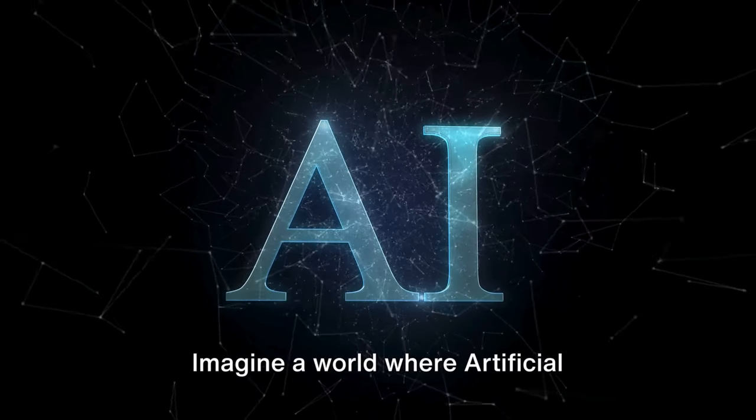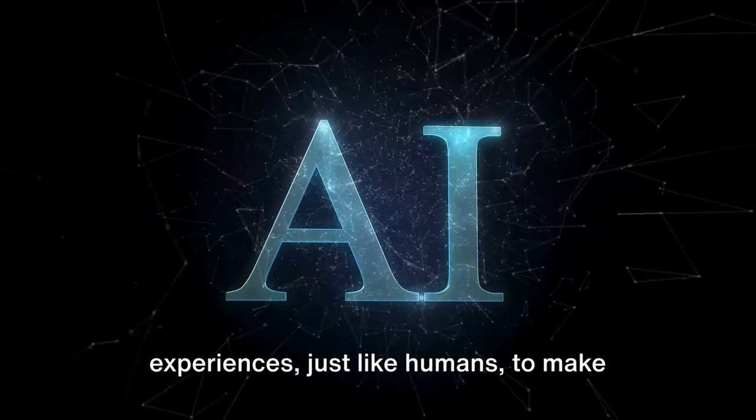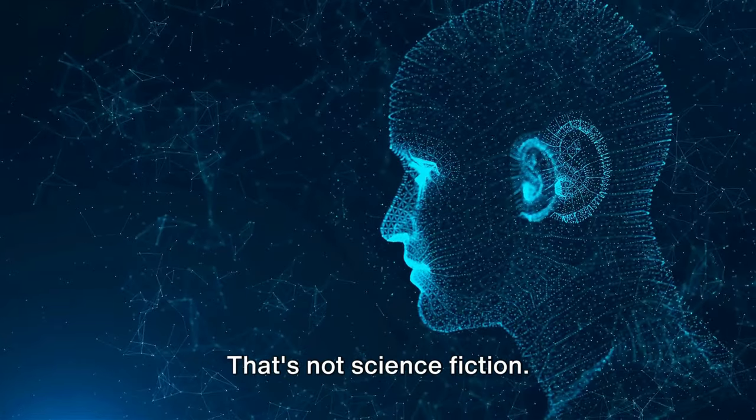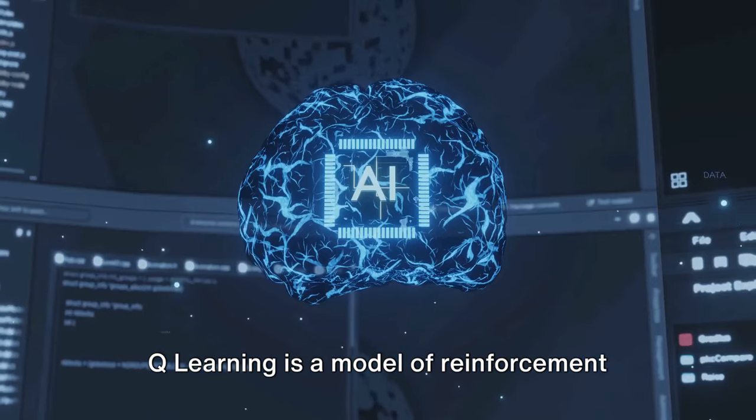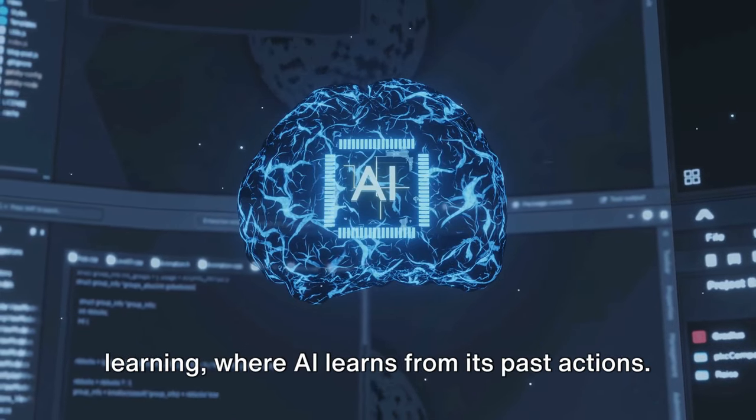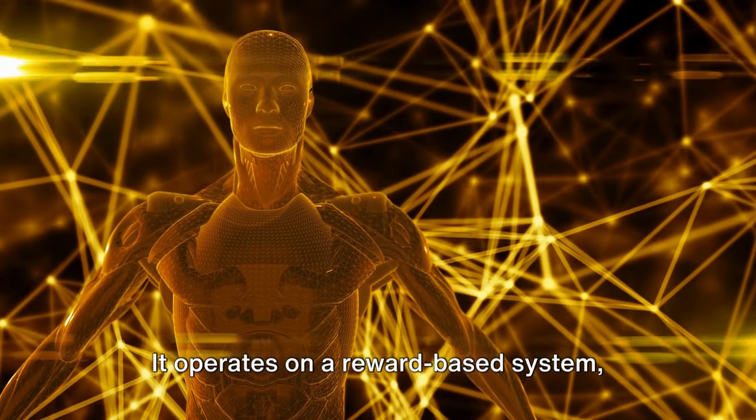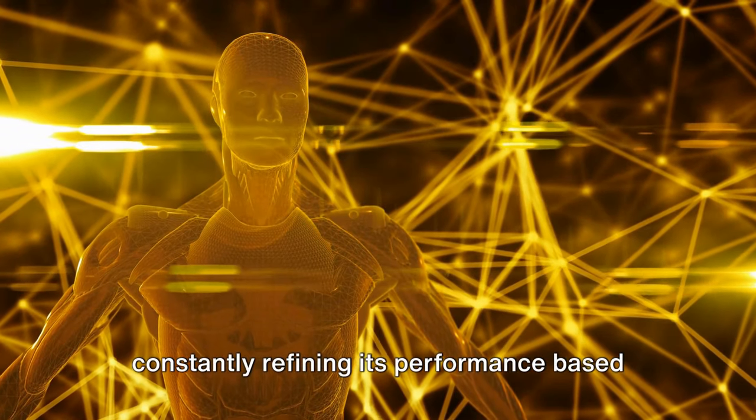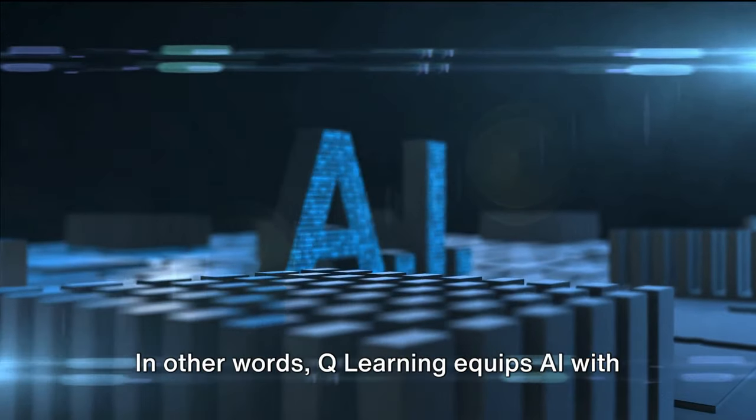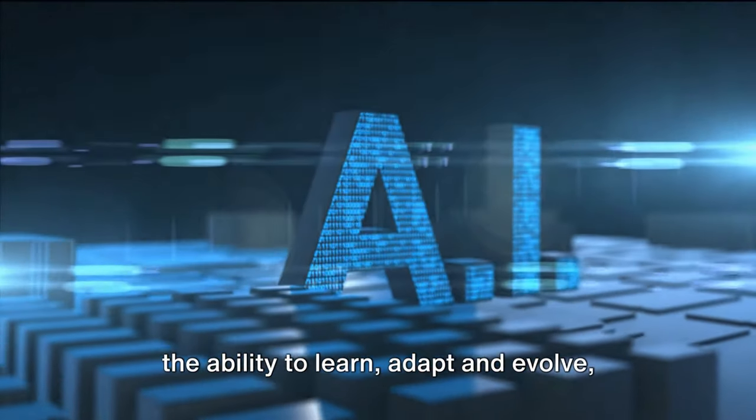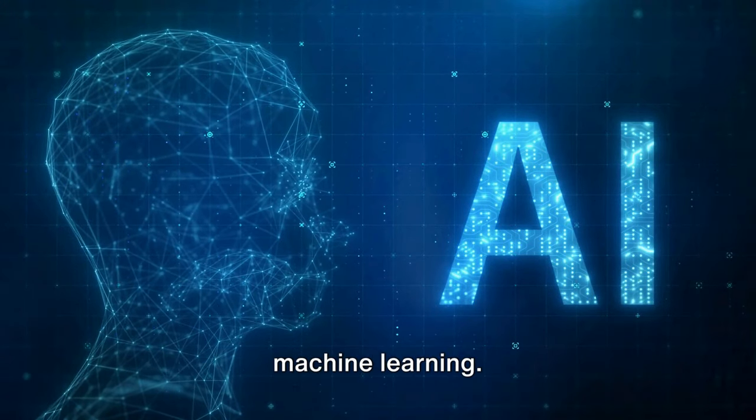Imagine a world where artificial intelligence systems learn from their experiences just like humans to make better decisions. That's not science fiction. That's the power of Q-Learning in AI. Q-Learning is a model of reinforcement learning, where AI learns from its past actions. It operates on a reward-based system, constantly refining its performance based on the results of its decisions. In other words, Q-Learning equips AI with the ability to learn, adapt, and evolve, making it a game-changer in the field of machine learning.